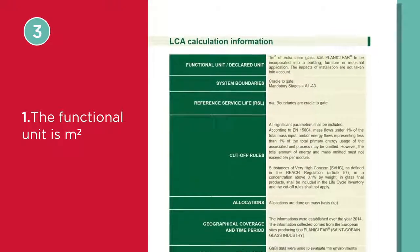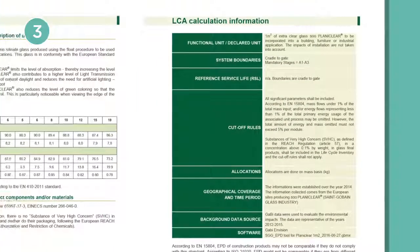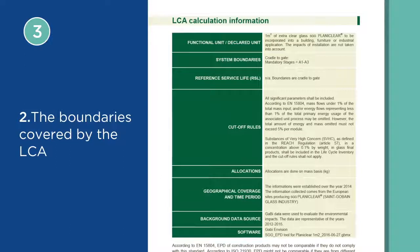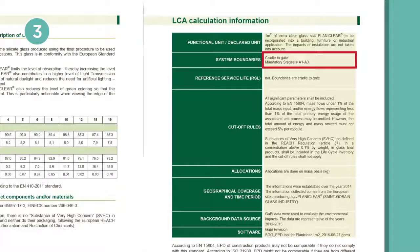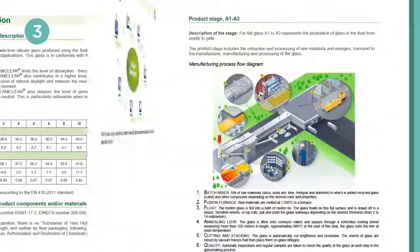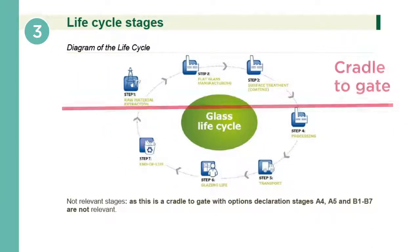This tells us that: one, the functional unit is meters squared — this can vary depending on the product, but for glazing the functional unit is always meters squared; two, the boundaries covered by the LCA — in other words, the stages of the life cycle covered by the assessment. Here it's cradle to gate, which means from the extraction of the raw materials to the factory gate.